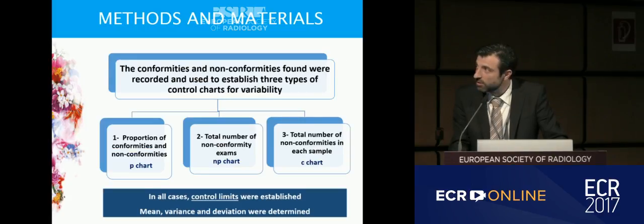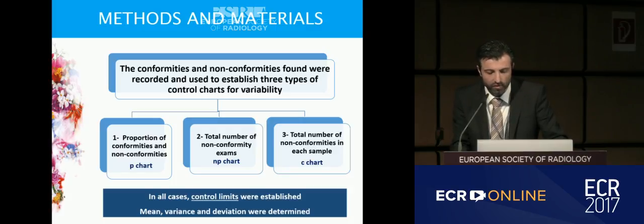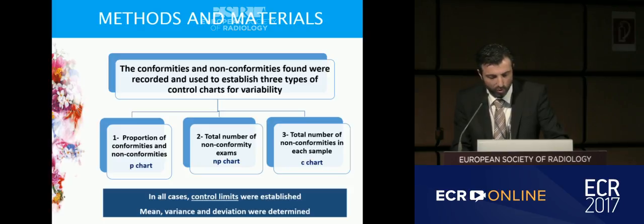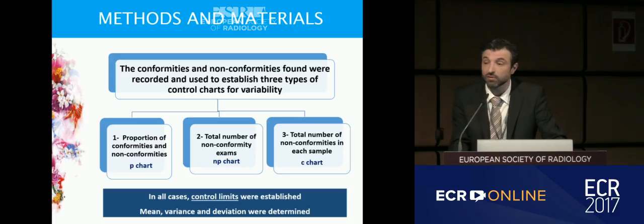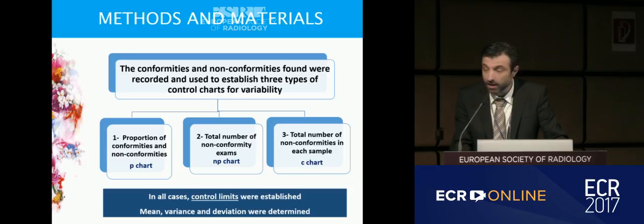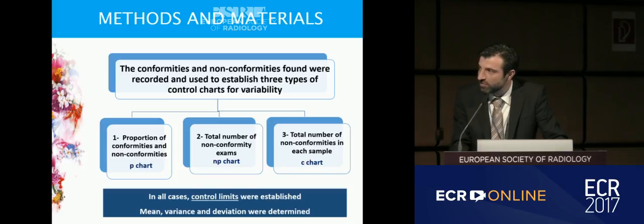The conformities and non-conformities found were recorded and used to establish three types of control charts for variability: the P chart — the proportion of conformities and non-conformities; the NP chart — the total number of non-conformity exams; and the C chart — the total number of non-conformities in each sample. In all cases, control limits were established, and mean, variance and deviation were determined.